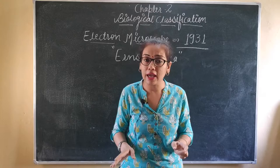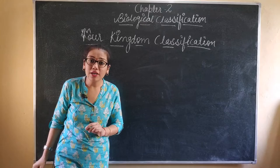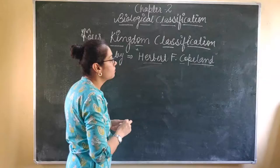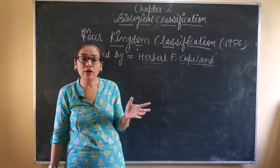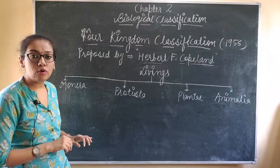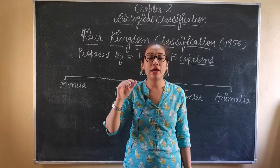After the three-kingdom classification was rejected, the four-kingdom classification came, which was proposed by Herbert F. Copeland. Copeland proposed this classification system in 1956. He divided organisms into four kingdoms, creating a novel kingdom called Monera, separating bacteria and other microorganisms that had previously been included in Protista.